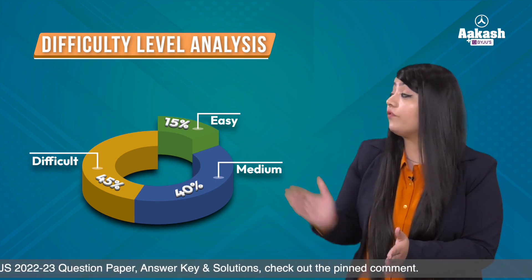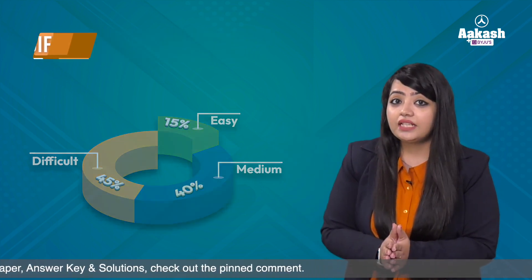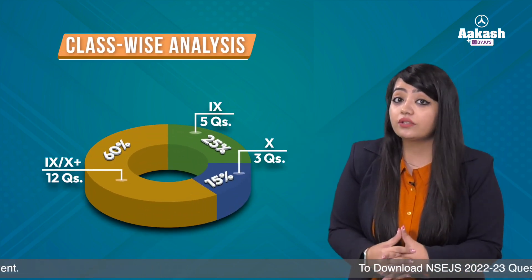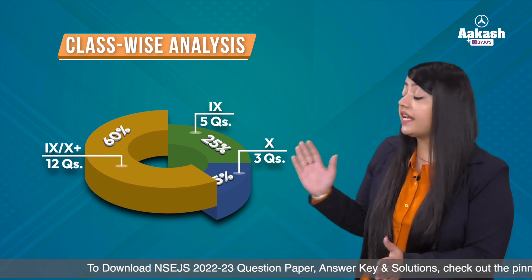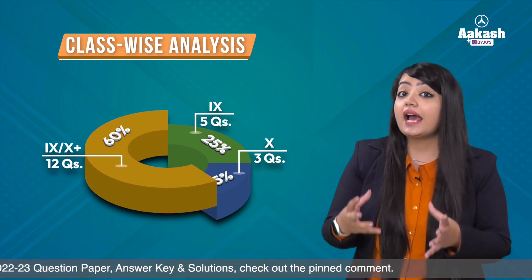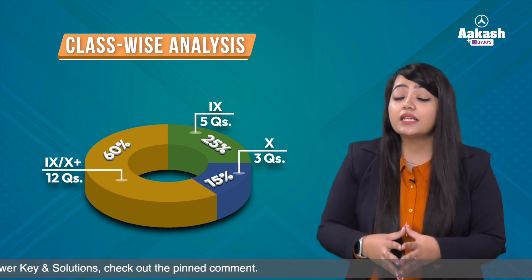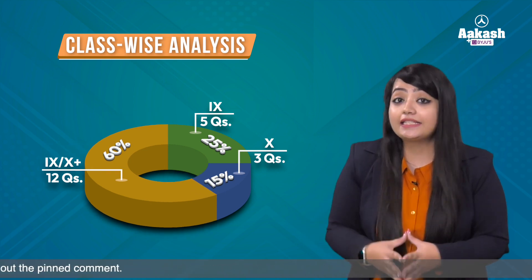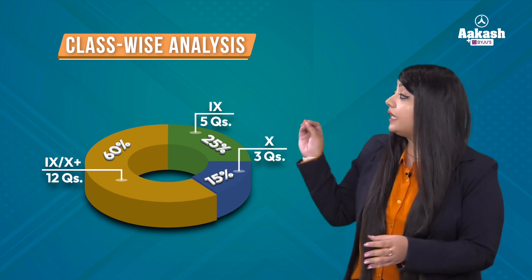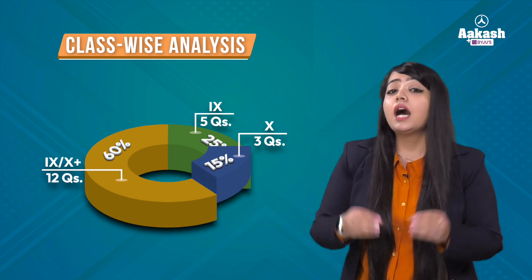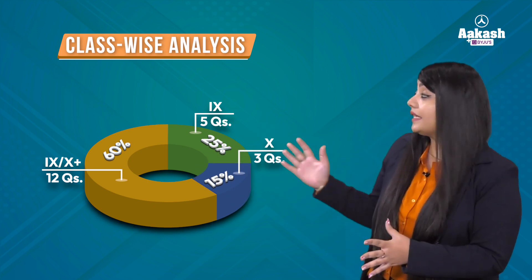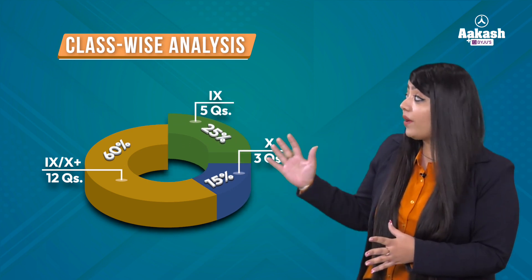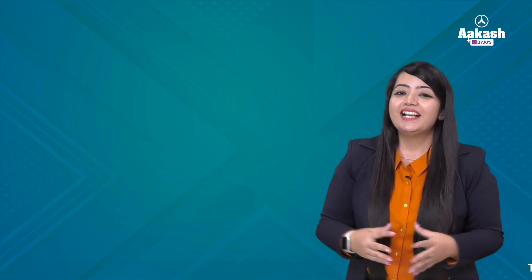Moving on to the class-wise distribution of chemistry questions: almost 60 percent of the paper was an extension of Class 9th and 10th. Apart from this, about three questions were asked from Class 10th and five questions were from Class 9th standard.